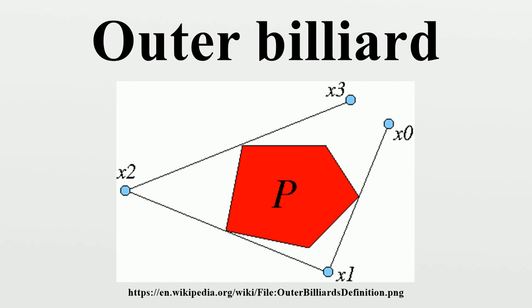An orbit is called periodic if it eventually repeats. An orbit is called aperiodic if it is not periodic. An orbit is called bounded if some bounded region in the plane contains the whole orbit. An orbit is called unbounded if it is not bounded.